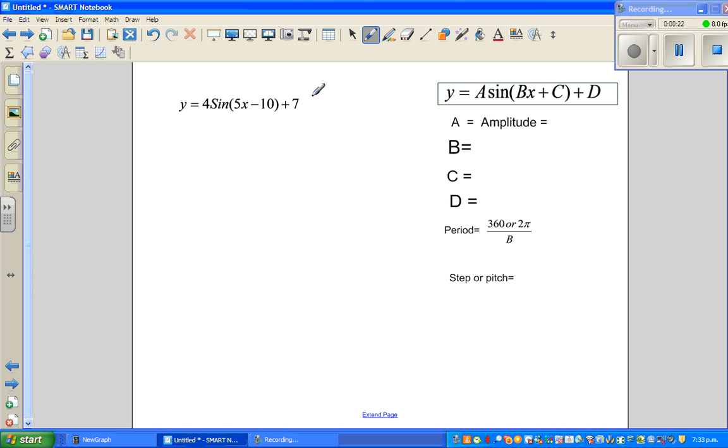A is the amplitude. A is the coefficient of x and the coefficient of x is 4. So the amplitude of this graph is 4. B tells me the period. So what is b here? B is 5.